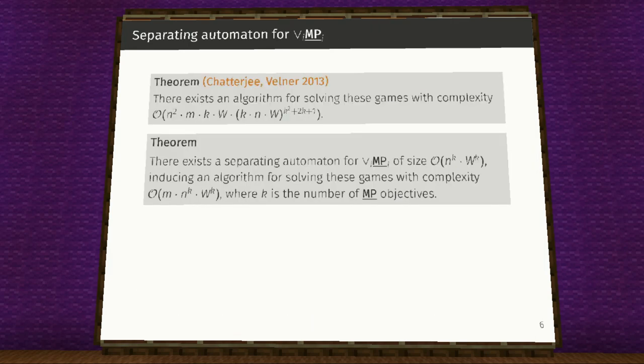We now see the separating automata for combination of multiple mean payoff with infimum objectives where K is the number of mean payoff objectives combined. Chatterjee and Filner have already solved these games but we give a better complexity for this that is we reduce the exponent on W to K.